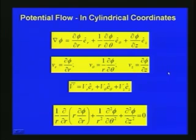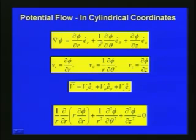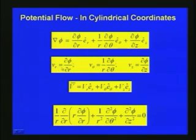We have already seen the Laplace equation in the Cartesian coordinate system. Now for potential flow in the cylindrical coordinate system, we can describe ∇φ as ∂φ/∂r · êᵣ + (1/r)∂φ/∂θ · êθ + ∂φ/∂z · êz. The radial velocity is ∂φ/∂r, the tangential velocity vθ = (1/r)∂φ/∂θ, and vz = ∂φ/∂z.